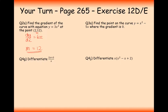For this question: find the point on y equals x squared minus 5x where the gradient is 0. First, dy/dx equals 2x minus 5. We want to find when this gradient equals 0. Setting 2x minus 5 equal to 0, x is going to have to be 2.5 when the gradient equals 0.